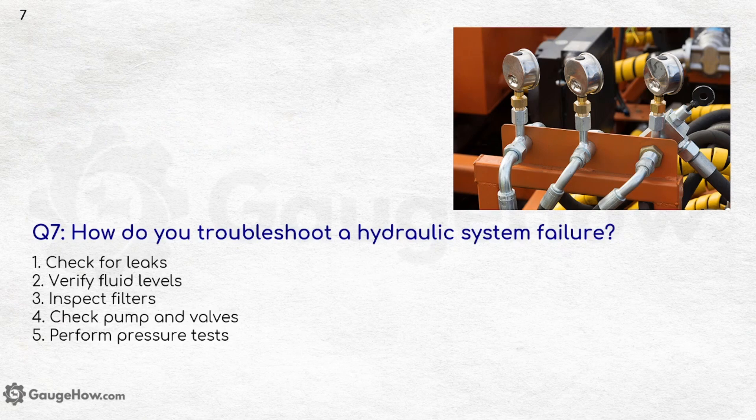How do you troubleshoot a hydraulic system failure? Check for leaks, verify fluid levels, inspect filters, check pump and valves, and perform pressure tests. Even at our house, if the water connectivity or speed of our tap has reduced, we first verify whether there is a leak or what is the fluid level. This is how you troubleshoot a hydraulic system failure even in a big equipment industry.